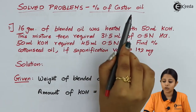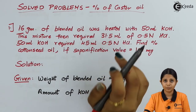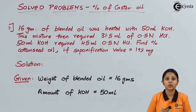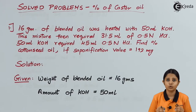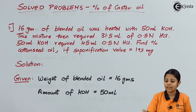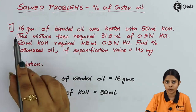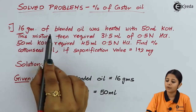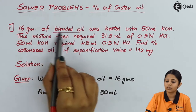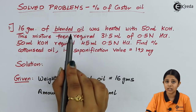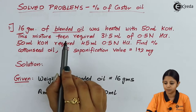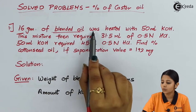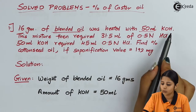This percentage of castor oil is generally in a blend. Whenever in the question you find the word blend or you find the word castor oil, you are going to use this method and this formula. Let's look at the question: 16 grams of blended oil — the word blended is used, which means we are going to use certain formulas related to the percentage of castor oil. HCl was heated with 50 ml of KOH.